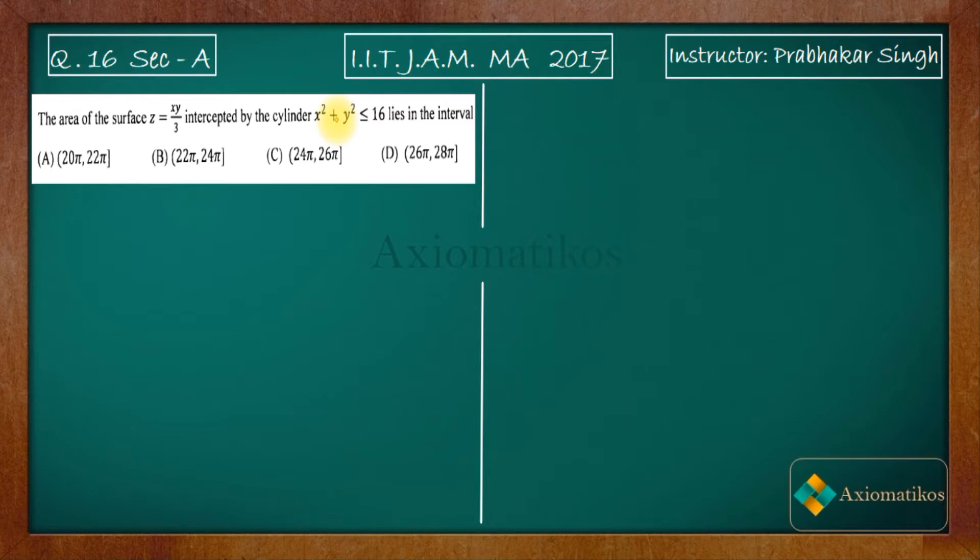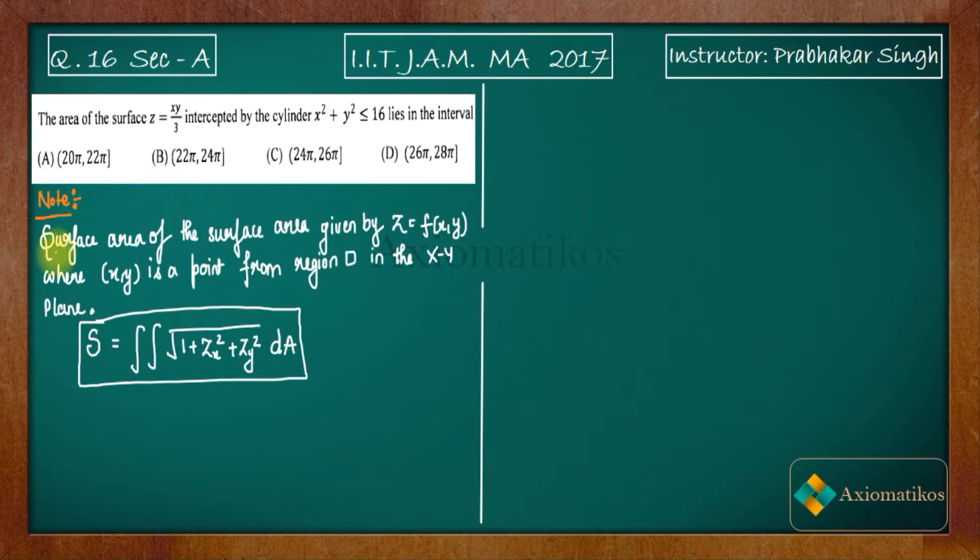It is a very easy problem if you understand and know the formula properly. So let me write that part. Surface area of the surface given by Z equals F where XY is a point from region D in the XY plane is given by S equals this.